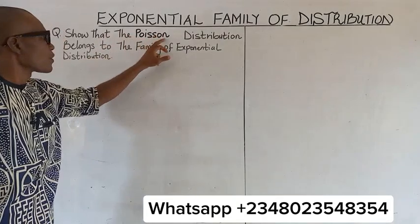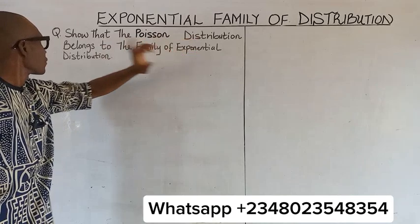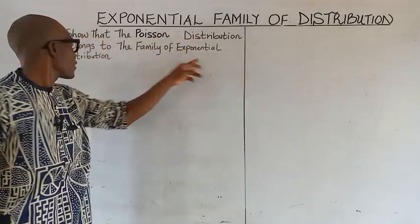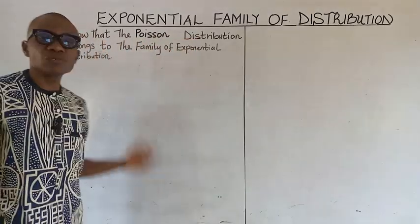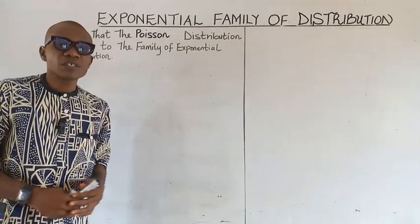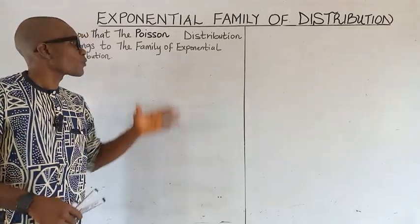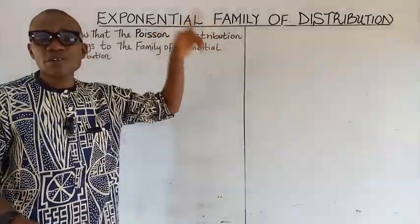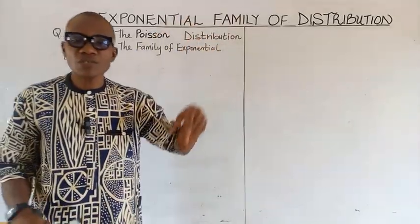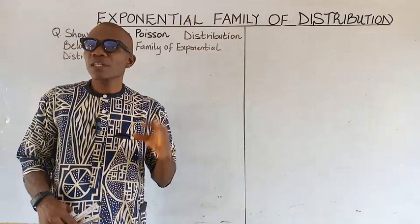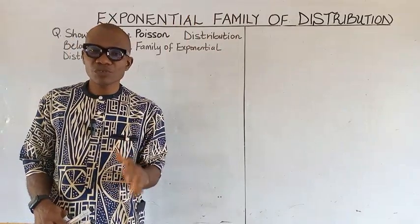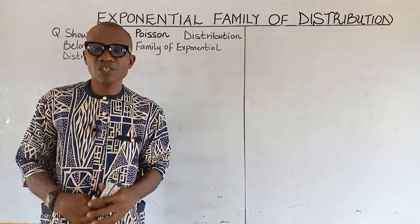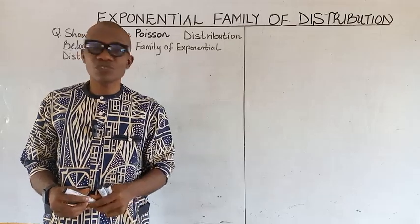Show that the Poisson distribution belongs to the family of exponential distributions. We are talking about the exponential family of distribution, and we want to show that the Poisson distribution belongs to the exponential family of distribution.